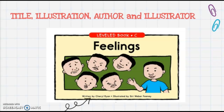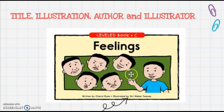Now my arrow is pointing to really small print at the bottom of the book. You'll notice it says written by. When the book is written by someone, that person is called the author — the author is someone who writes the story or the book. Next, I have the illustrator. The illustrator is the person who creates the illustrations and the pictures — an artist, someone who draws or paints the pictures in the story.